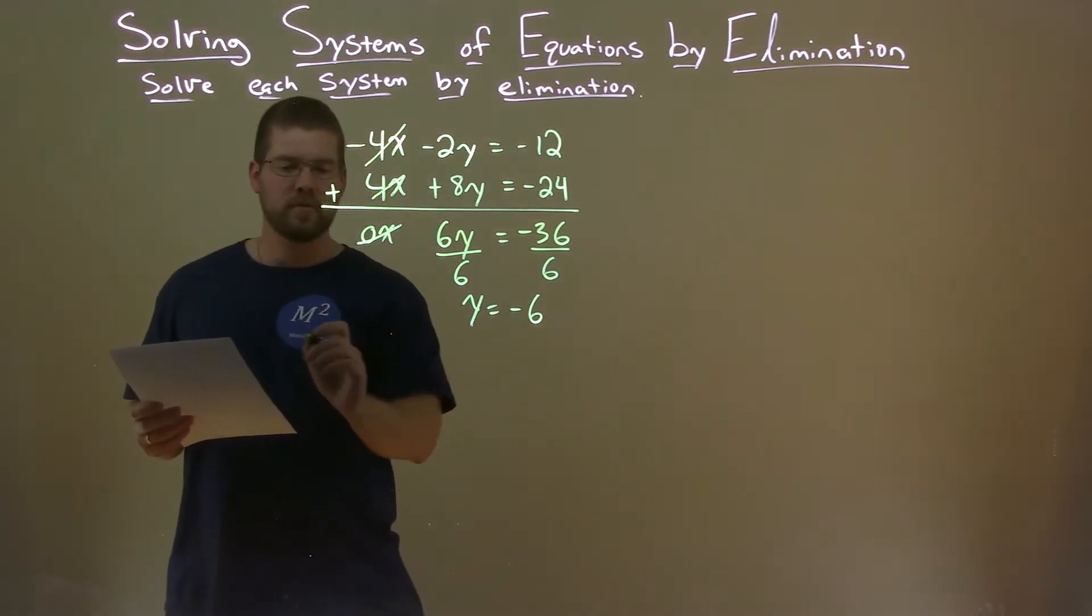So negative 4x here, negative 2 times negative 6 is positive 12. Two negatives make a positive, and that equals negative 12.